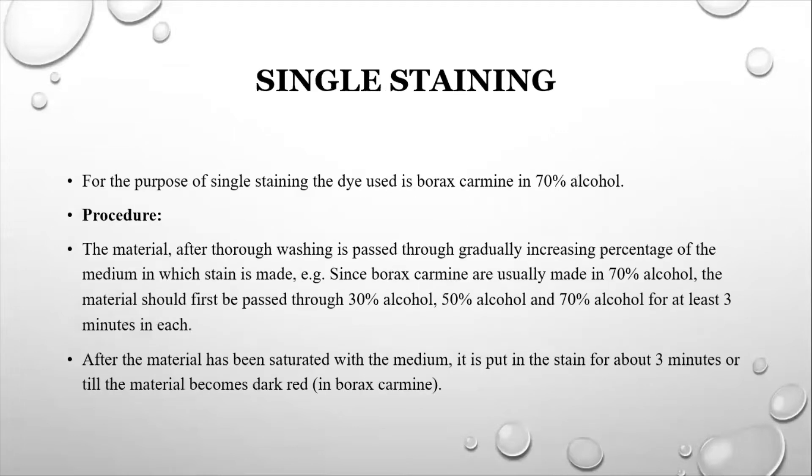Now we are going to do the single stain. So what is the process? Here we are using the dye or the stain borax carmine made in 70% alcohol. First, we are going to pass the sample through 30% alcohol, 50% alcohol, and then 70% alcohol for 3 minutes each. After the material has been saturated with the medium, it is put in the stain for about 3 minutes or till the material becomes dark red in borax carmine.